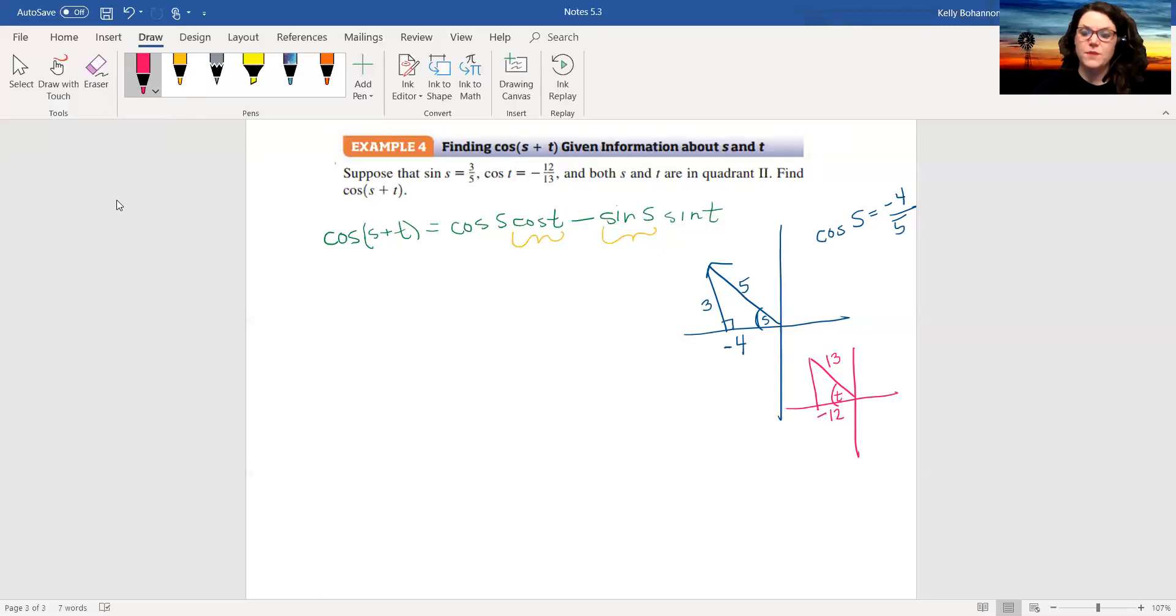So I could use Pythagorean theorem, a squared plus b squared equals c squared and just plug in the numbers that I know. A squared plus negative 12 squared equals 13 squared.